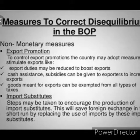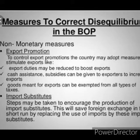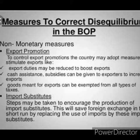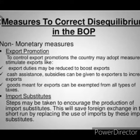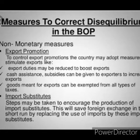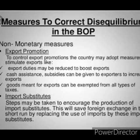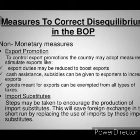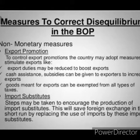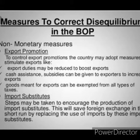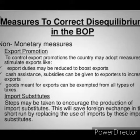Devaluation means the deliberate reduction of the official rate at which domestic currency is exchanged for another currency. For example, before it was 70 rupees equal to 1 dollar, but now it is 75 rupees equal to 1 dollar — meaning our rupee value has been devalued. Devaluation of Indian currency has happened 3 times: on 29th September 1949, on 6th June 1966, and on 1st July 1991. Now also our Indian currency is devalued because of COVID-19.